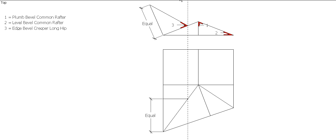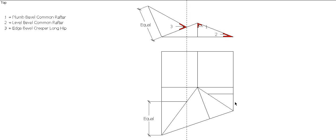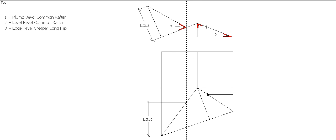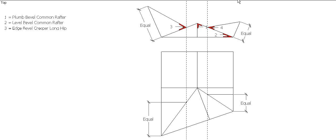Now we need to do the same on the other side, so we repeat the process. Draw in a creeper, develop that up, measure this distance, draw it in at 90 degrees to our true length, join up the two points — and that will give us our edge bevel for our short hip. So there's our two edge bevels for our hips.